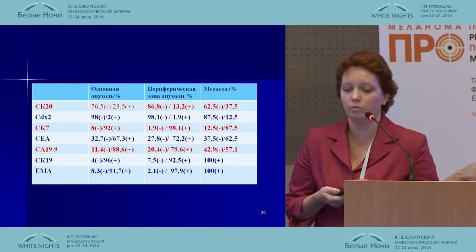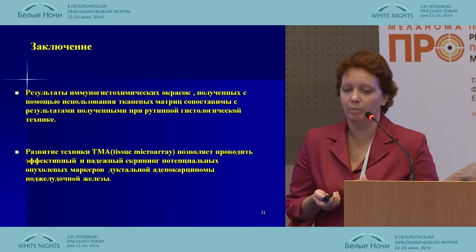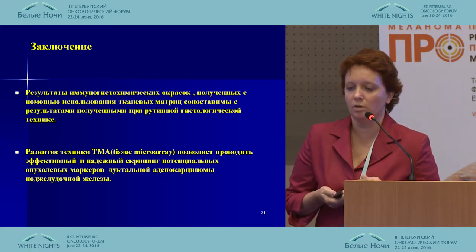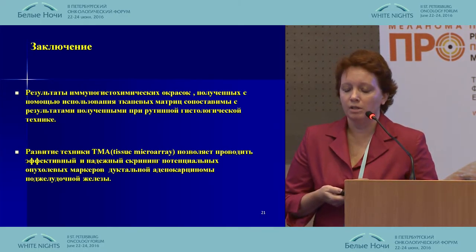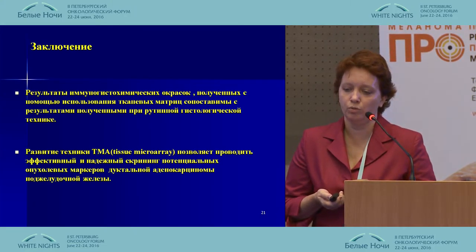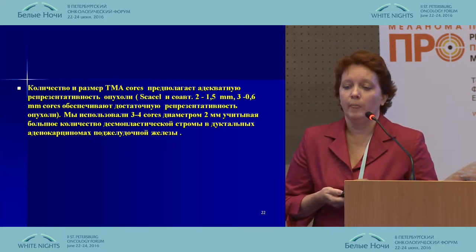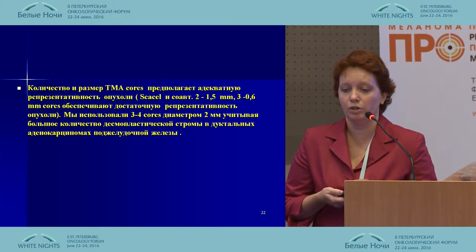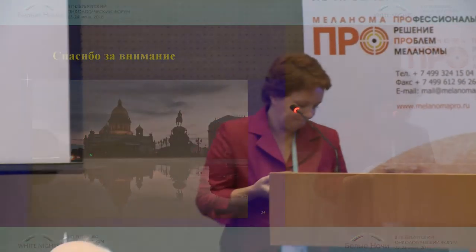This can be compared to what we found in the literature review, and it matches what we had previously. In conclusion, the results of IHC coloring compared to routine histological technique can be quite the same. The development of TMA has provided an effective approach in this area. The number and size of TMA cores must provide good representation of the tumor — ideally 1.5 mm diameter; we used 3–4 cores with a diameter of 2 mm, taking into consideration the high stromal content in ductal pancreas tumors.